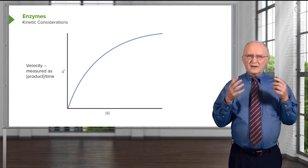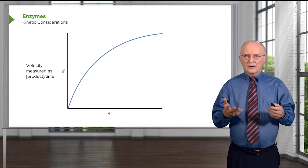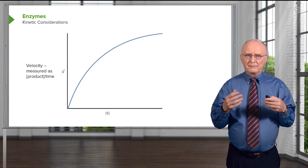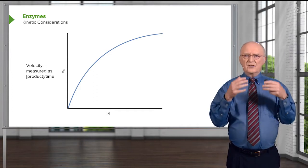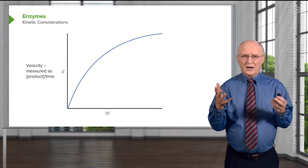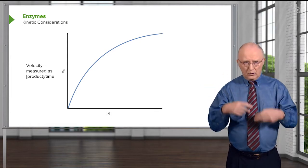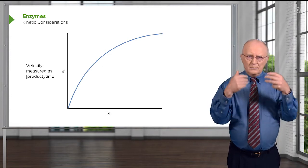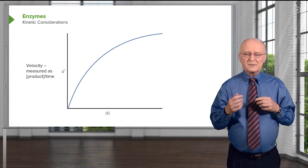The velocity of a reaction is measured as the concentration of product made divided by time. The concentration of product made per time. Well, we measure concentration in molar, millimolar, micromolar, etc. So that would be some molarity per time. That is how velocity is measured.